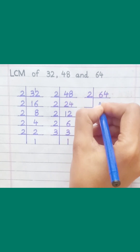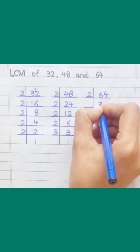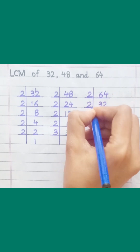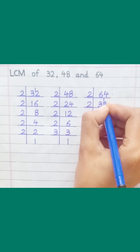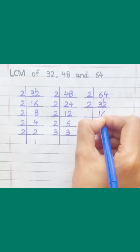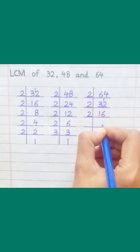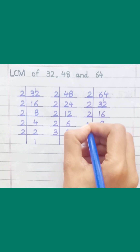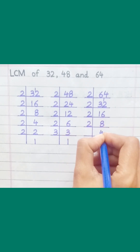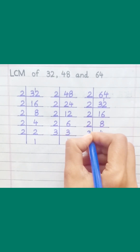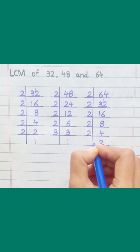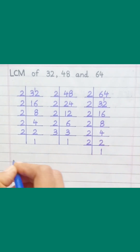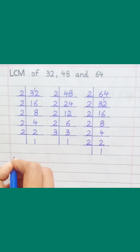64: 2 threes are 6, 2 twos are 4, 2 ones are 2, 2 sixes are 12, 2 eights are 16, 2 fours are 8, 2 twos are 4, 2 ones are 2. 32 equal.